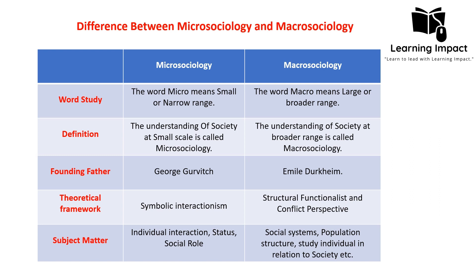Hi everyone, welcome to Learning Impact. In today's lecture we will study the difference between micro sociology and macro sociology. The word micro means small or narrow range, and as its name indicates, macro means large or broader range. Micro sociology focuses on the narrow range at a small level, and macro sociology has a broader range and focuses at a large scale.